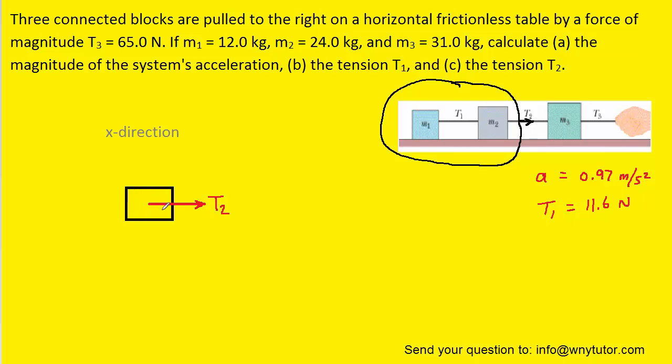So here is the free body diagram of the system. Note that because the system incorporates both m1 and m2, we would have to add together the masses to get the total mass of the system. And if we do that, we get 36 kilograms.